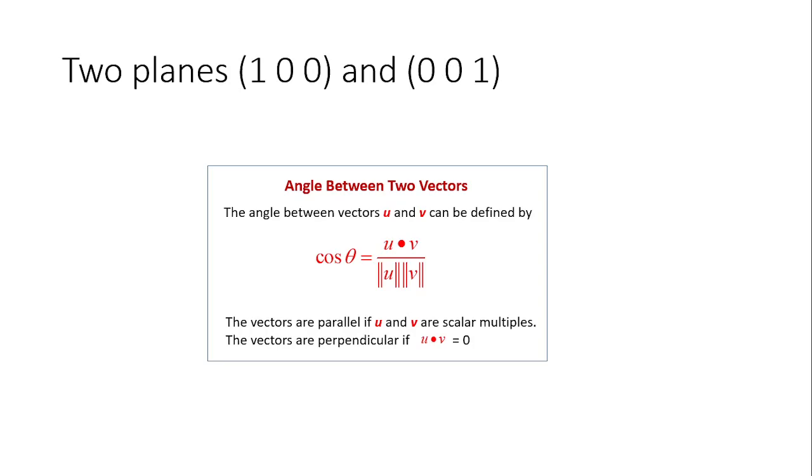The formula we will use: if you have two vectors for your plane, you can find the angle between them. We could simply do that for these Miller planes. So let's start.